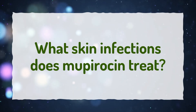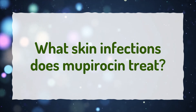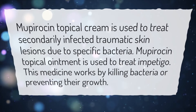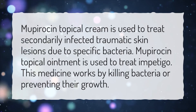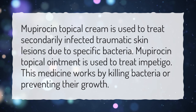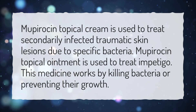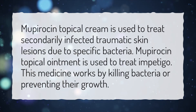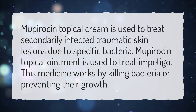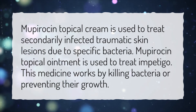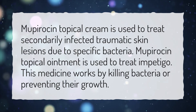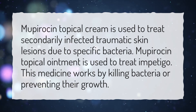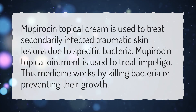What skin infections does Mupirocin treat? Mupirocin topical cream is used to treat secondarily infected traumatic skin lesions due to specific bacteria. Mupirocin topical ointment is used to treat impetigo. This medicine works by killing bacteria or preventing their growth.